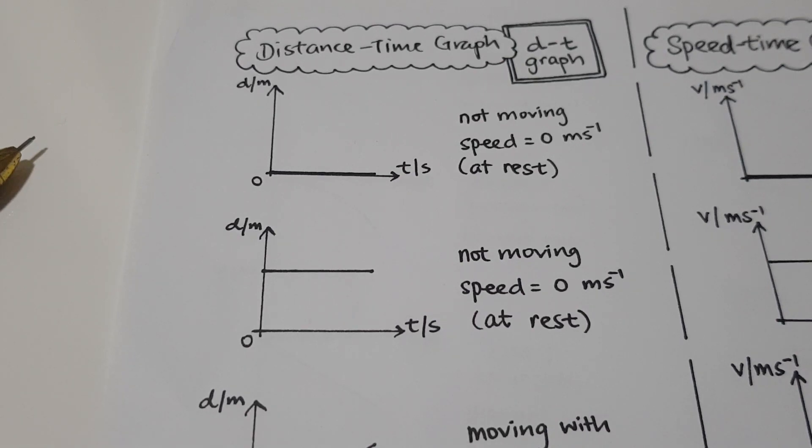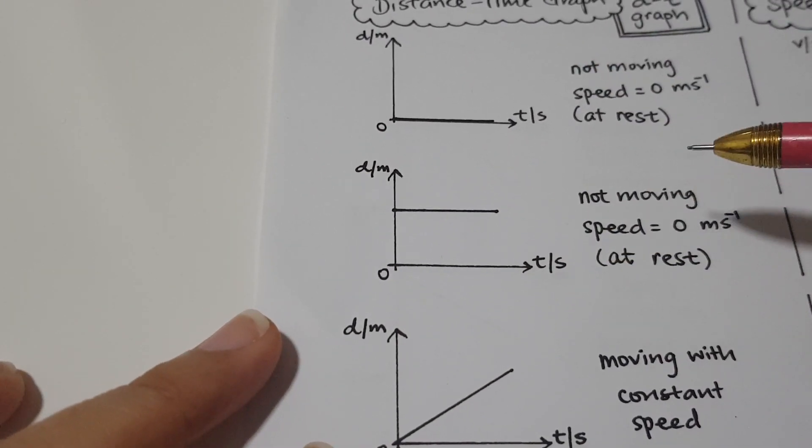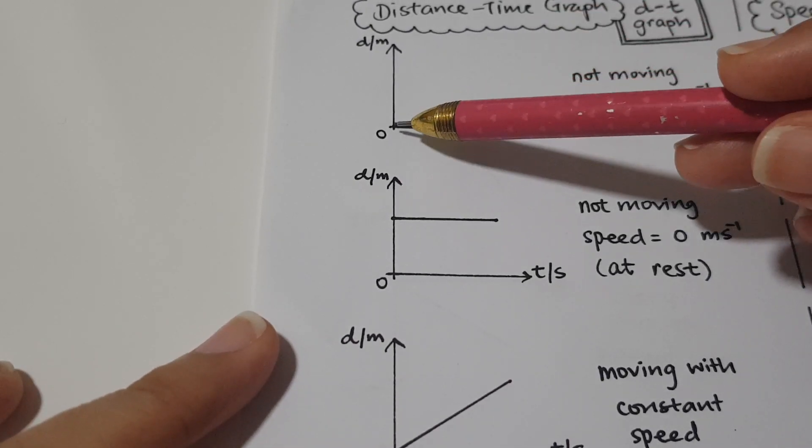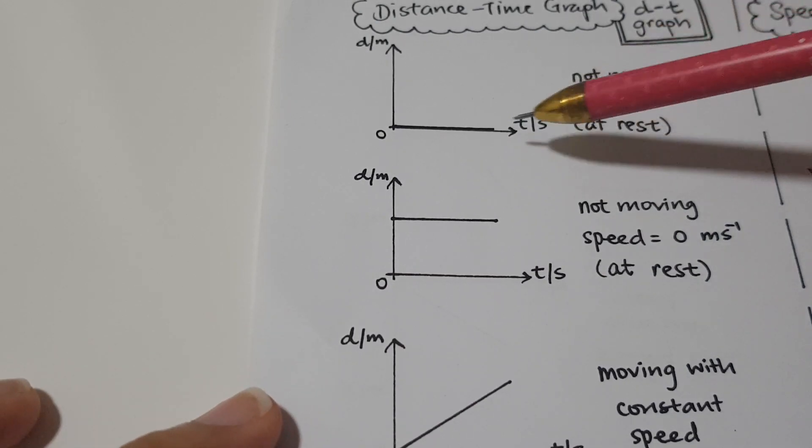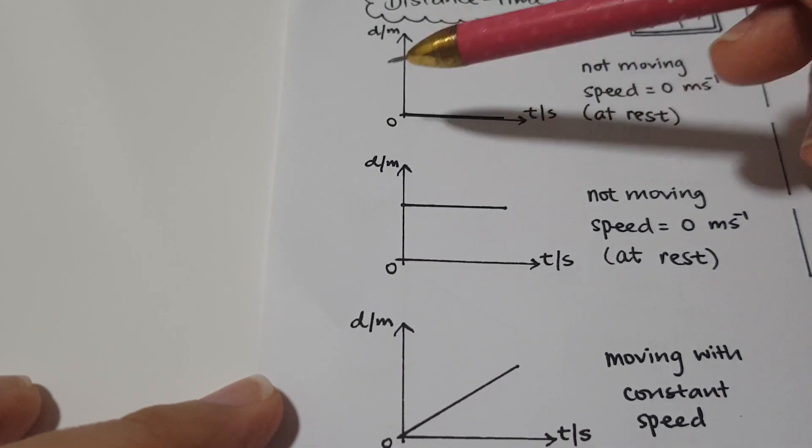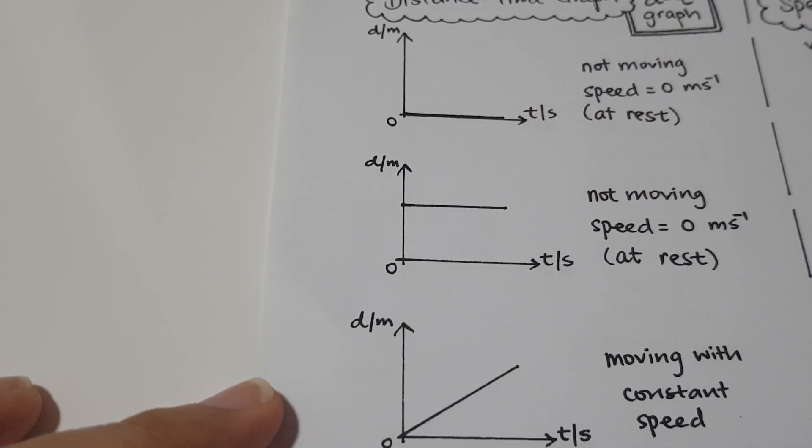So let's take a look at this. I'm going to go through a few different distance-time graphs with you. First, we have the one that's flat right at the bottom. So what does it mean? It just means that over time, the distance traveled is 0 meters.